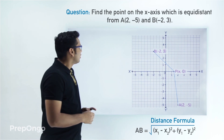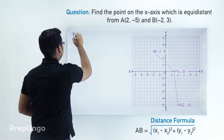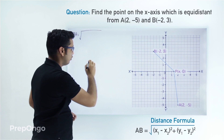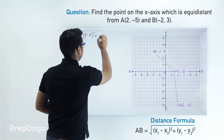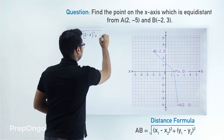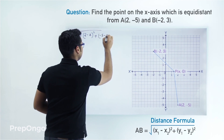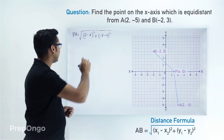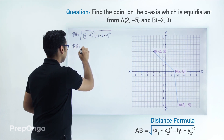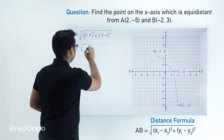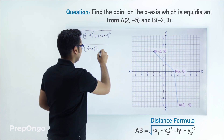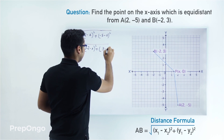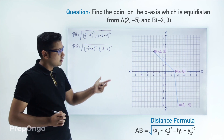Let's apply the distance formula. PA equals the square root of (2 - x) whole square plus (-5 - 0) whole square. Similarly, PB equals the square root of (-2 - x) whole square plus (3 - 0) whole square. Since we are given that these two distances are equal, we can equate PA and PB.